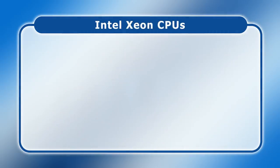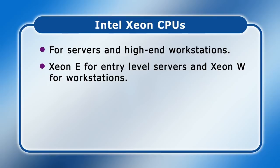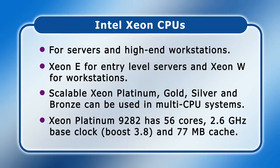Finally, we have Intel's Xeon CPUs, which are intended for servers and high-end workstations. These come in a number of families, including Xeon E for entry-level servers and Xeon W for workstations. There are then four different kinds of scalable Xeon CPU called Xeon Platinum, Gold, Silver, and Bronze, all of which allow systems to be built with more than one processor. At the time of making this video, the most powerful Xeon chip is the Platinum 9282, which has 56 cores, a 2.6 GHz base frequency, a turbo speed of 3.8 GHz, and 77 MB of cache. Remember, this scalable processor is intended for use in a multi-CPU system.